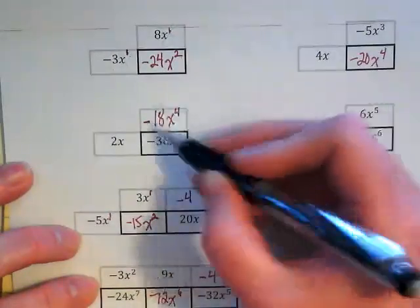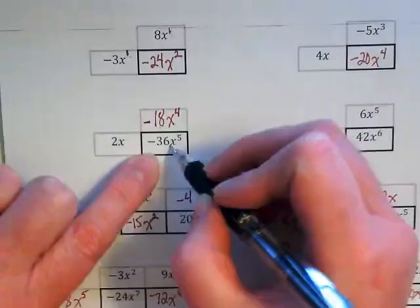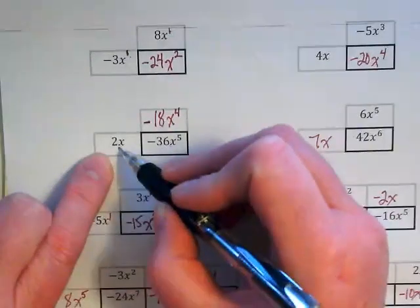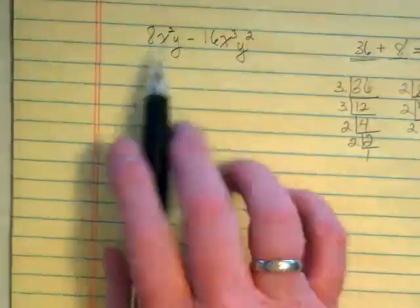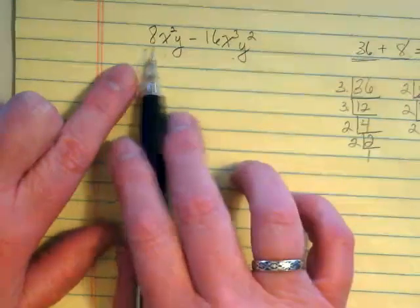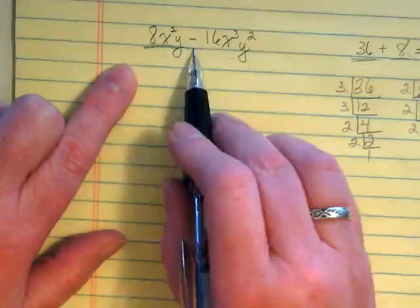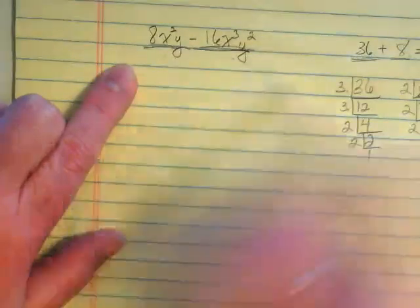This one we found was negative 18x to the 4th because we took this and we divided 2x out of it and we were left with this. Well, we're doing a very similar thing here. But what I need to know is I need to have a list of what's in everything that's in this, all of the pieces,